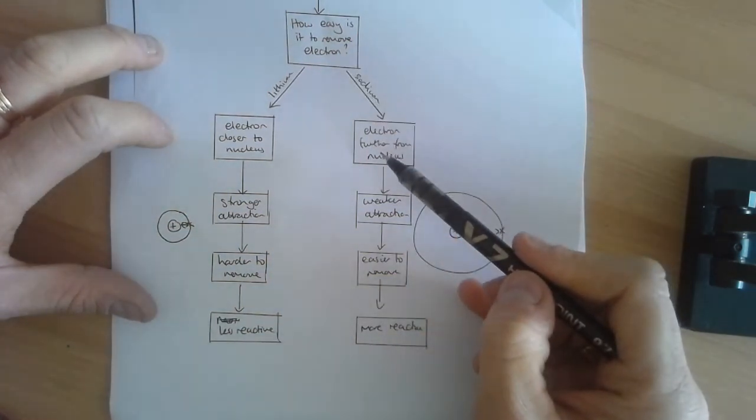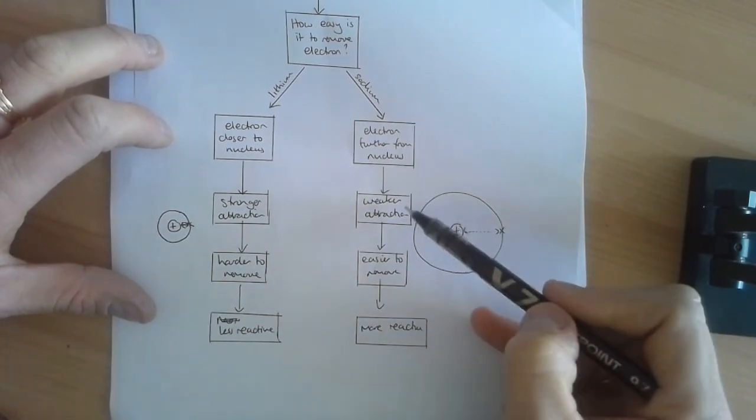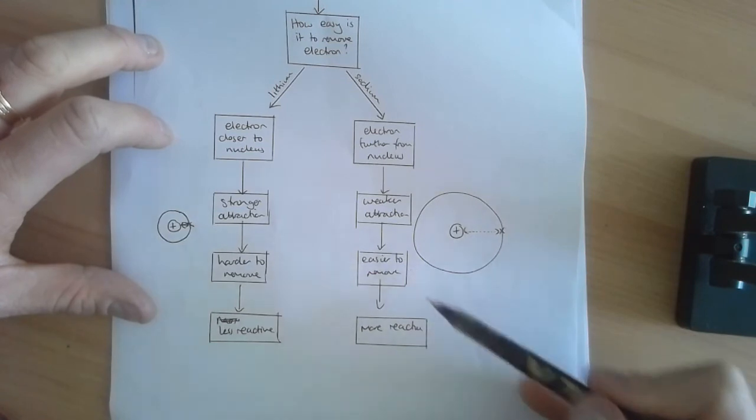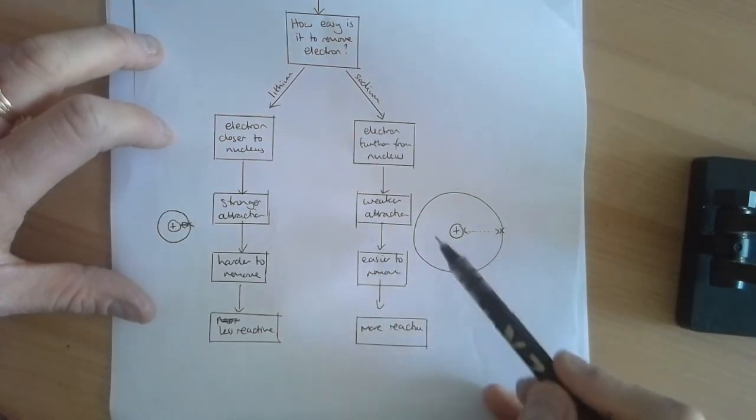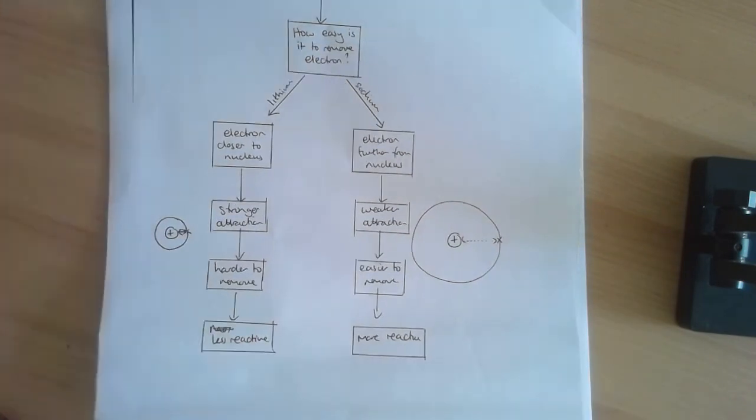With sodium, the electron is going to be further from the nucleus because there's more shielding electron shells. We have a weaker attraction, it's easier to remove, and therefore sodium is more reactive. And as we go down the group, this is just going to get bigger and bigger, and this effect is going to increase.